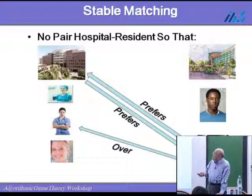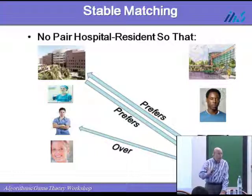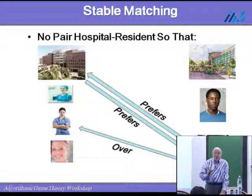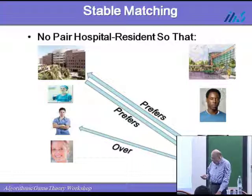So that organization creates the stable matching. There are some complications I'm not going into — because they now take into consideration also couples, husband and wife, spouses, who want to be at the same place, which makes the assignment more complicated. But let's talk about the pure case.